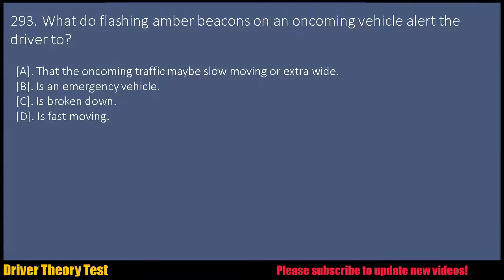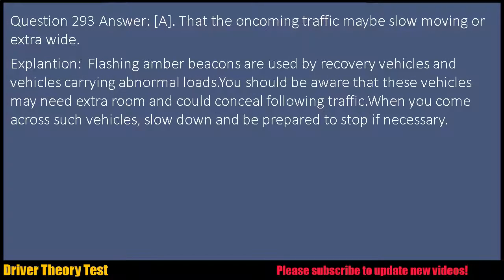Question 293: What do flashing amber beacons on an oncoming vehicle alert the driver to? a. That the oncoming traffic may be slow moving or extra wide. b. It is an emergency vehicle. c. It is broken down. d. It is fast moving. Question 293 Answer: A. That the oncoming traffic may be slow moving or extra wide.